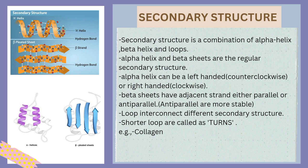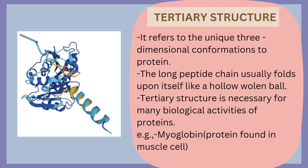A loop is the part that interconnects different secondary structures. If the loop is shorter, we call it a turn, which generally contains 3 to 6 amino acid residues. An example of a secondary structure protein is collagen, which is the most abundant protein in the animal world.